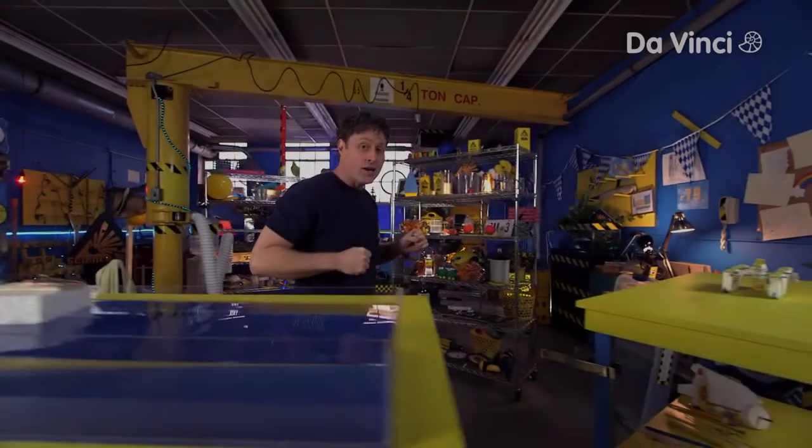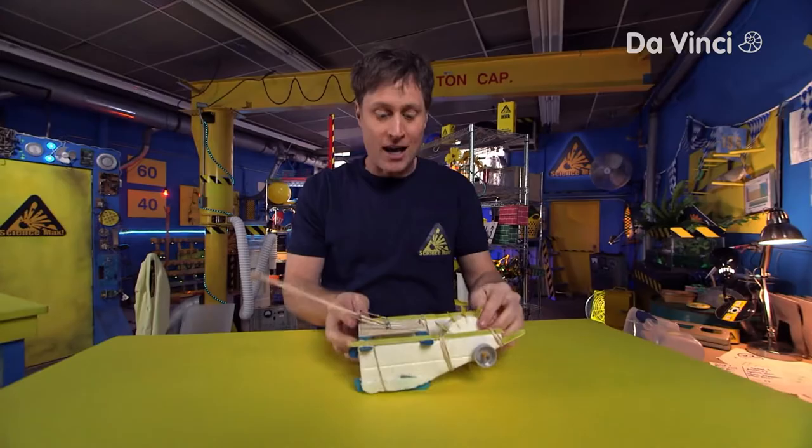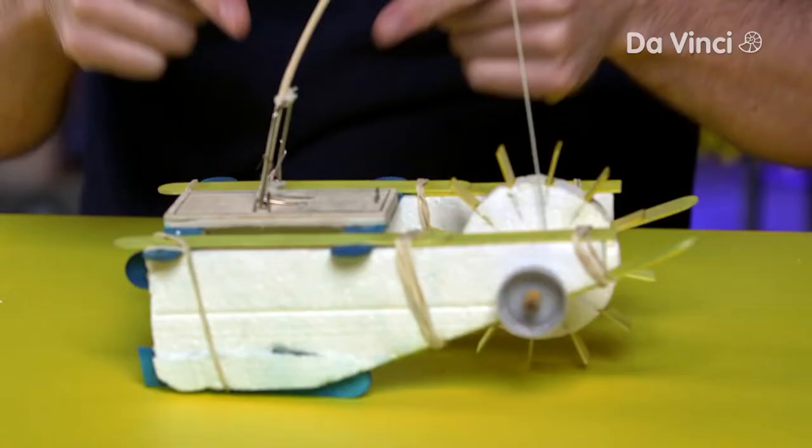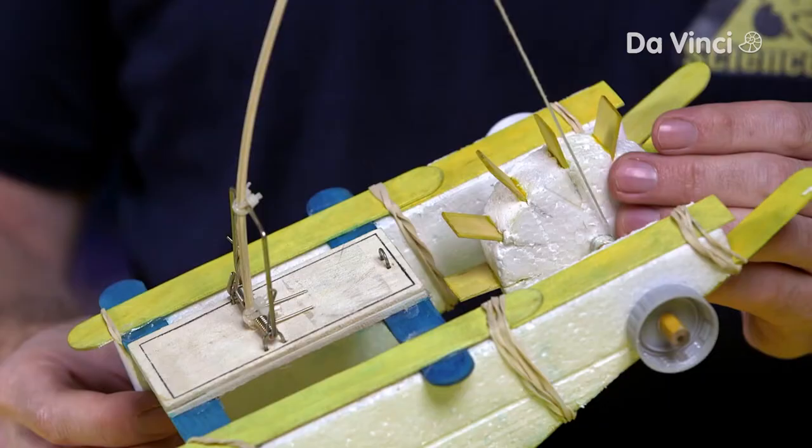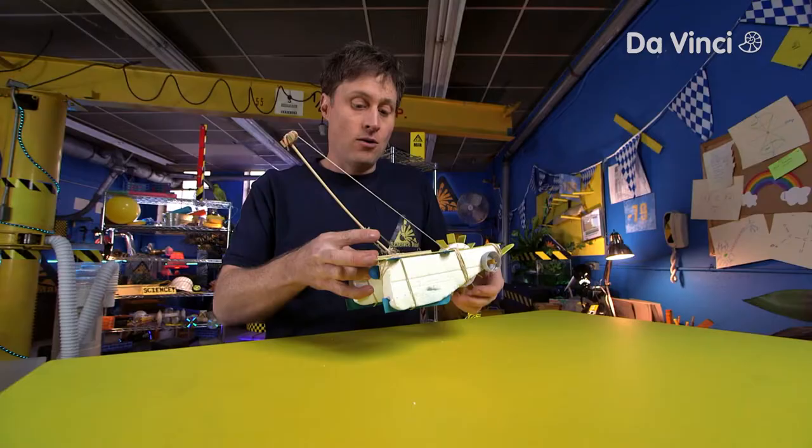What we're going to do is build this. This is the mousetrap boat, and it works like this. I've got the mousetrap, and it's attached to a long arm. That arm has a string on it, and it goes around the paddle wheel. As the mousetrap unwinds, the paddle wheel spins like that, which pushes the boat forward.